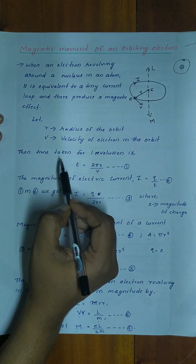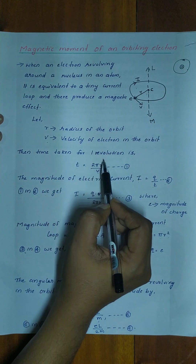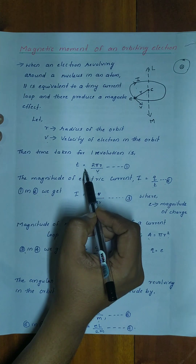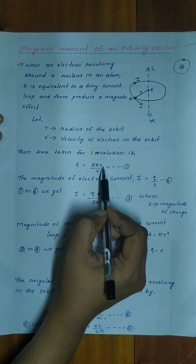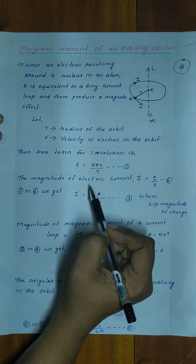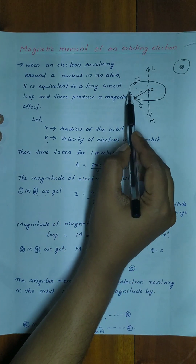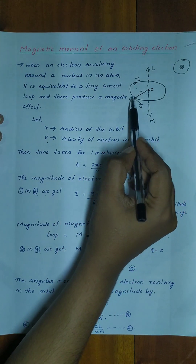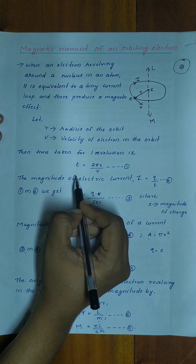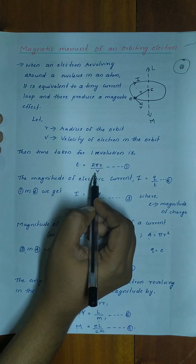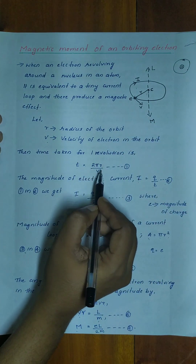Then, the time taken for one revolution is T = 2πr/v.